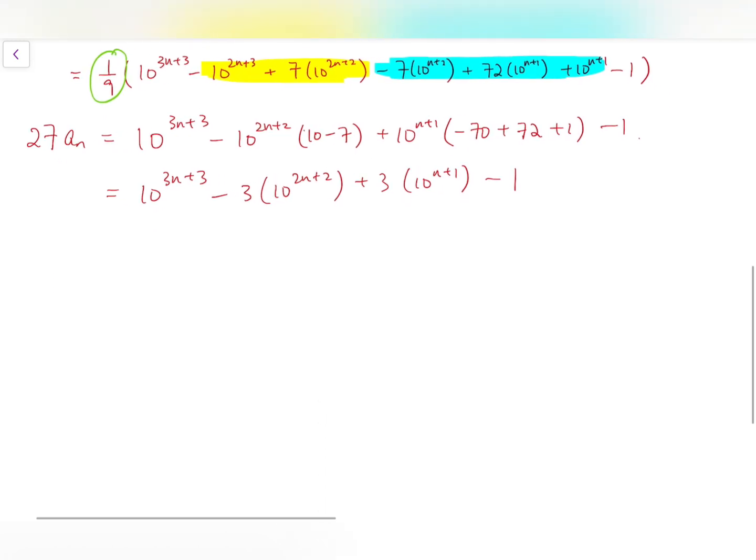So from this, if you cannot recognize the form, I'll suggest you to let u equals 10 to the power n plus 1. Then this expression will become u cubed minus 3u squared plus 3u minus 1. So this is actually u minus 1, all cubed, which means it's actually equal to 10 to the power n plus 1, minus 1, all cubed.